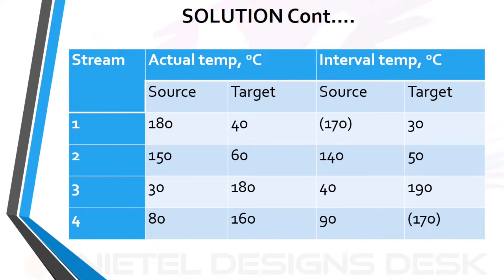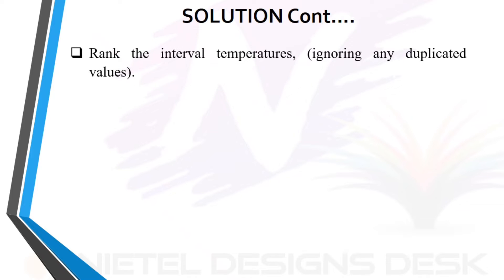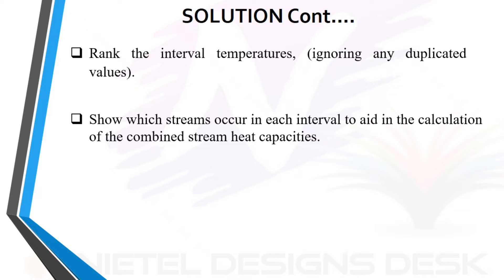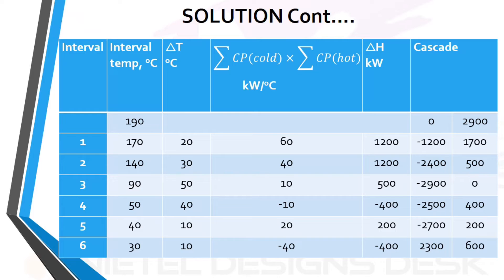Reproduce the second table. Next, rank the interval temperatures, ignoring any duplicated values, and show which streams occur in each interval to aid in the calculation of the combined stream heat capacities. Now set out the problem table with ranks having the following headings: interval, interval temperature, and cascade.